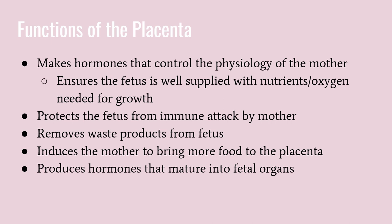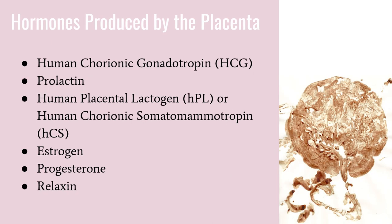The placenta serves as the interface between the mother and the fetus. I highly suggest that you review the important functions of the placenta during pregnancy very carefully. Hormones produced by the placenta include human chorionic gonadotropin, also known as HCG, which stimulates the corpus luteum. The corpus luteum produces the hormone progesterone that makes the uterus a healthy environment for a developing fetus. A new corpus luteum forms each time you ovulate and breaks down once you no longer need it to make progesterone.